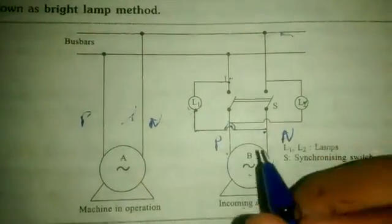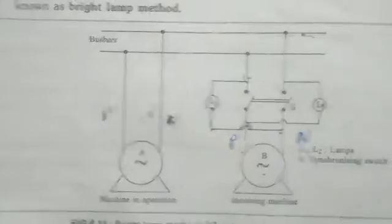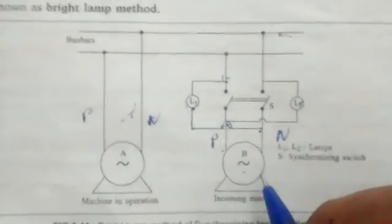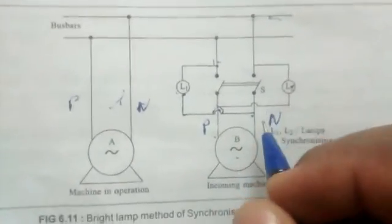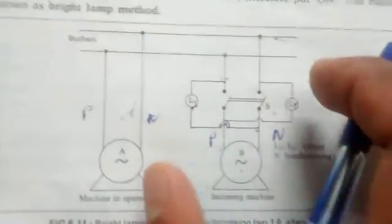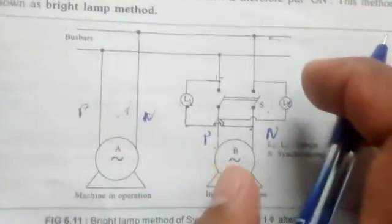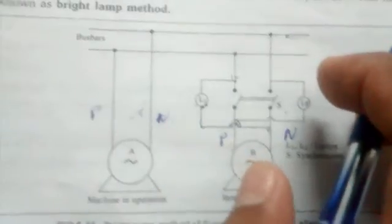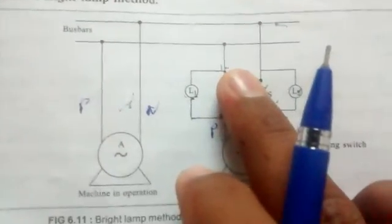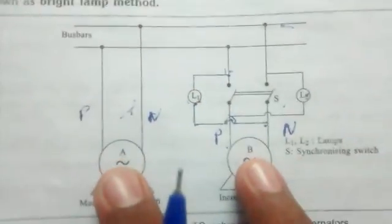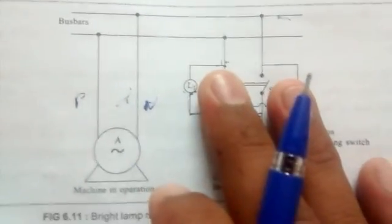Now we are going to increase the incoming machine speed. We are going to decrease it slowly. We are going to increase the L1 lamp and L2 lamp. We are going to increase both the voltage until they are equal. In that case, we close the switch — equal voltage equals equal load.